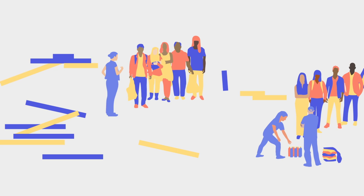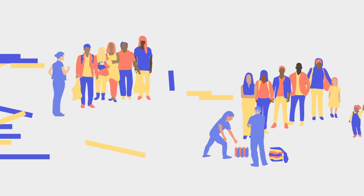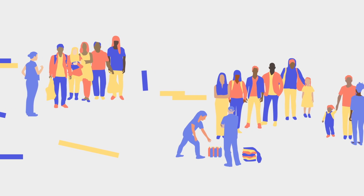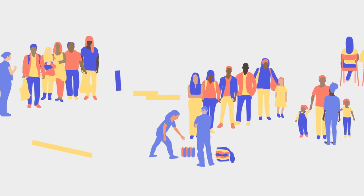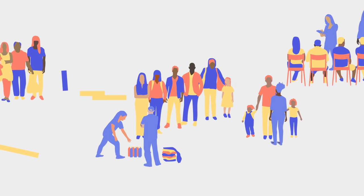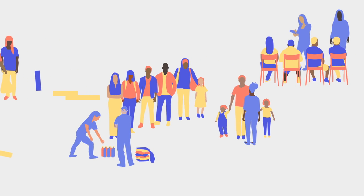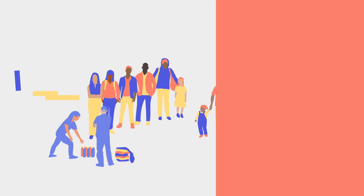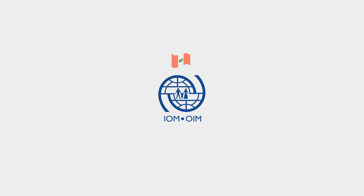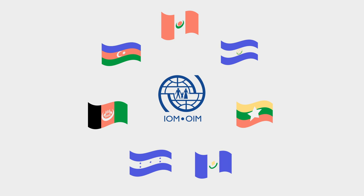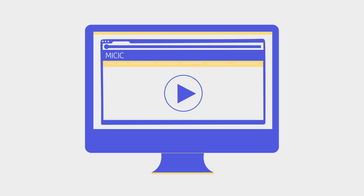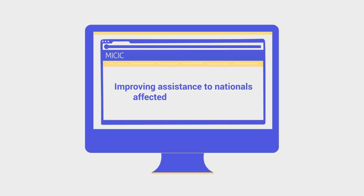Improving the capacity to respond to crises of relevant personnel is key to ensuring that they can address their nationals' acute needs for services and assistance. It is with this aim in mind that IOM, in collaboration with foreign services of its various member states, has developed an e-learning course on improving assistance to nationals affected by crises abroad.